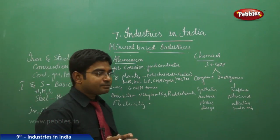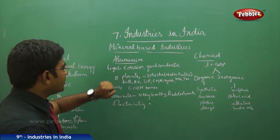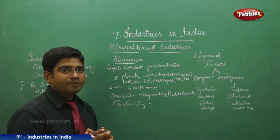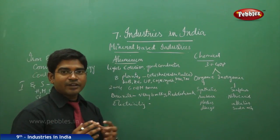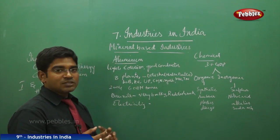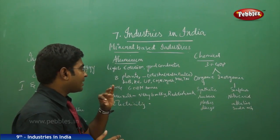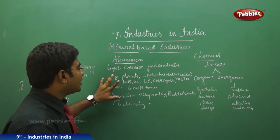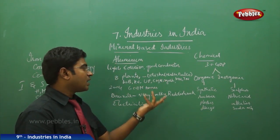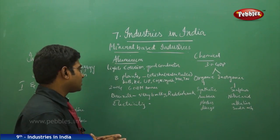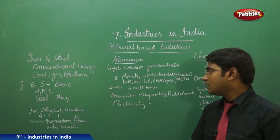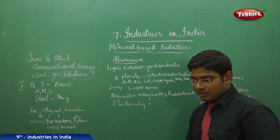Moving to the aluminum sector, aluminum has good qualities: it is very light in weight, corrosion-resistant, a very good conductor of heat, malleable, and easily makes alloys with other minerals. India has nearly eight aluminum plants located in Odisha at Nalco and Balco, West Bengal, Kerala, UP, Chhattisgarh, Maharashtra, Tamil Nadu, and other regions. In 2004, India produced 600 million tons of aluminum.